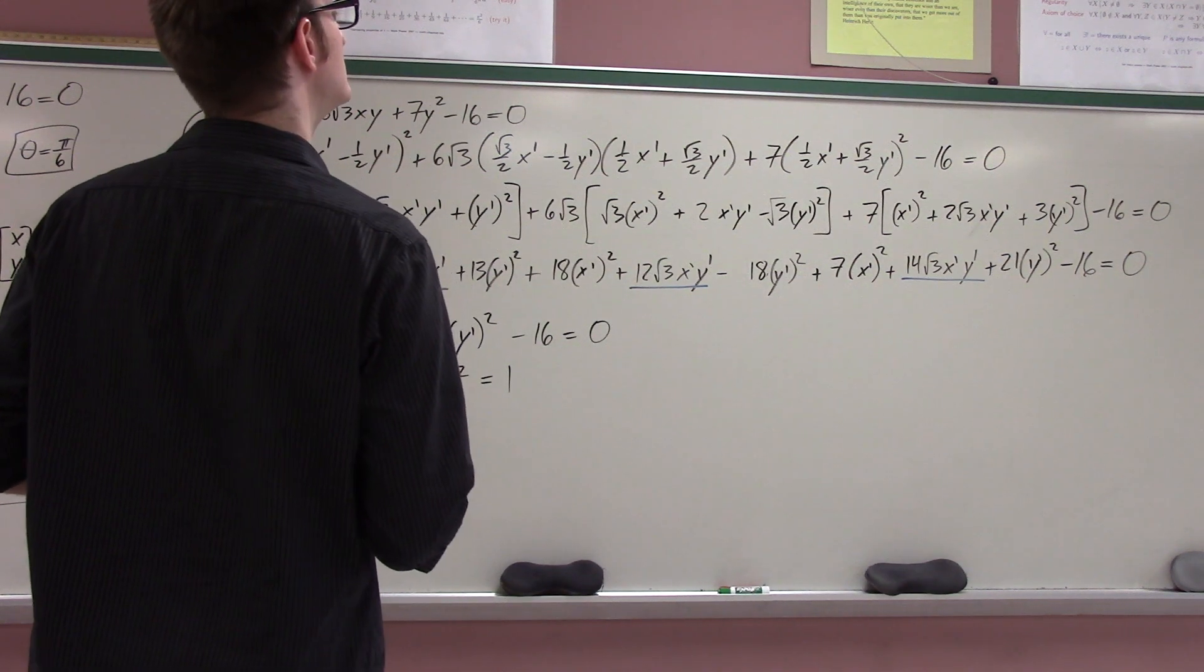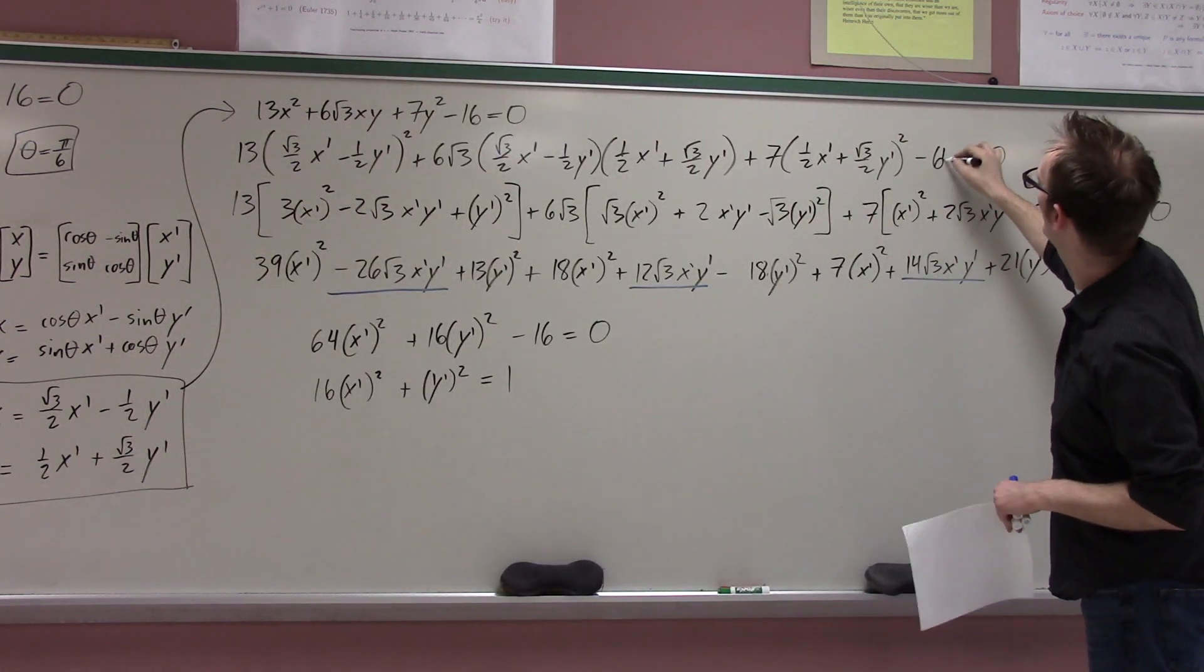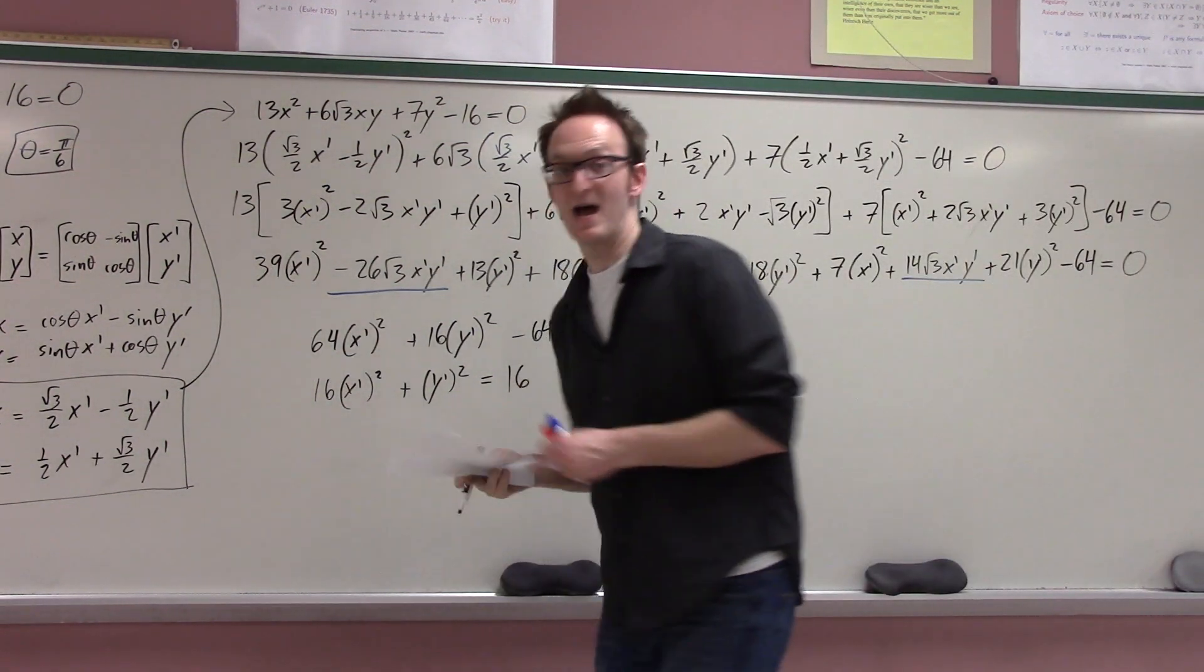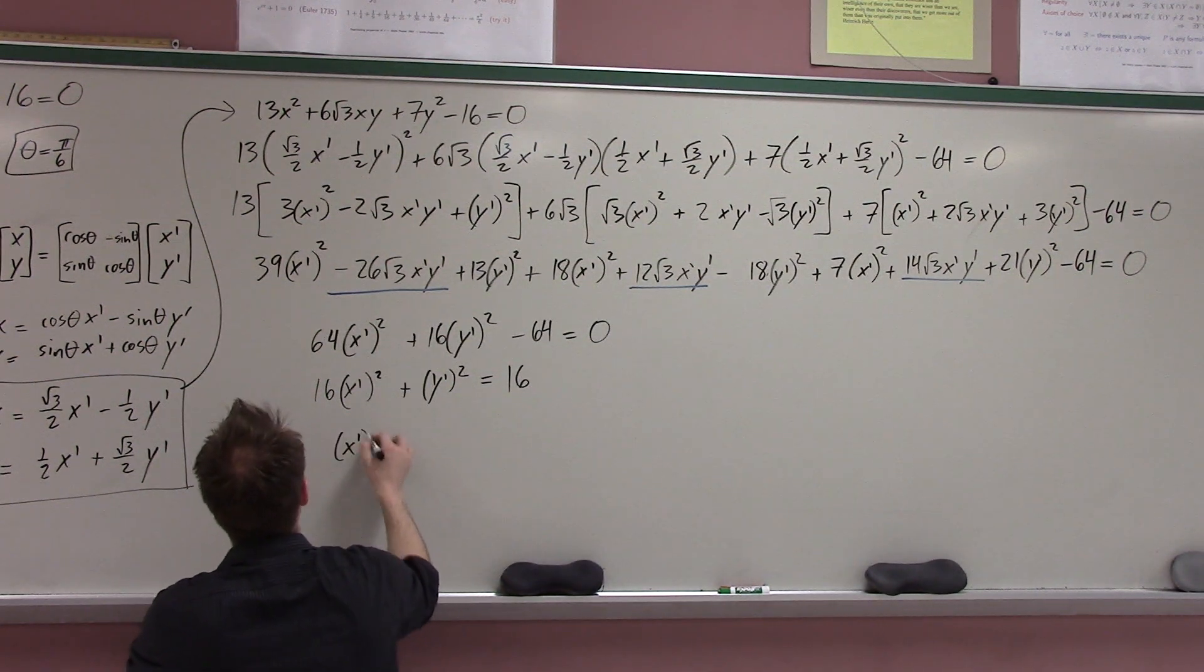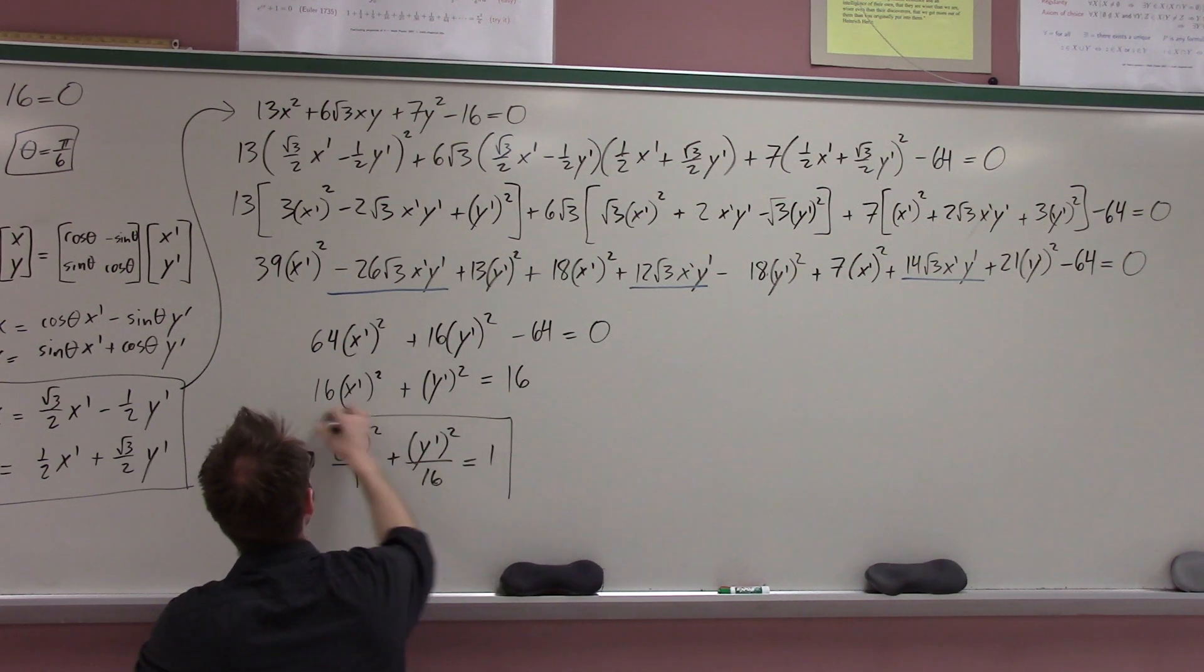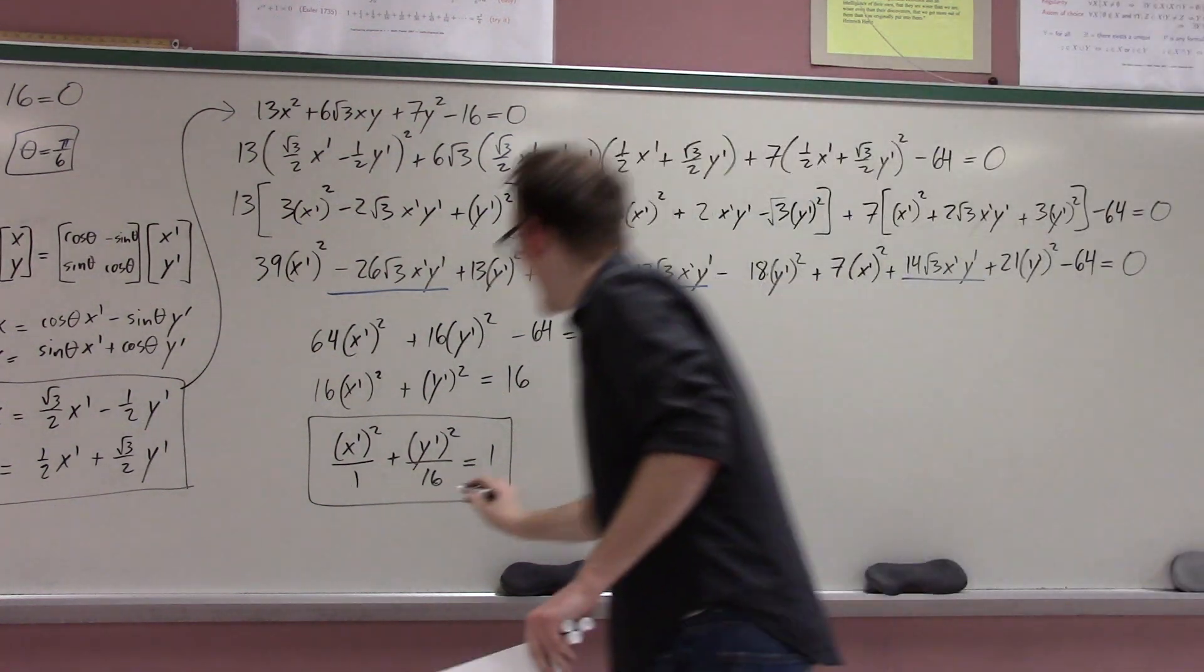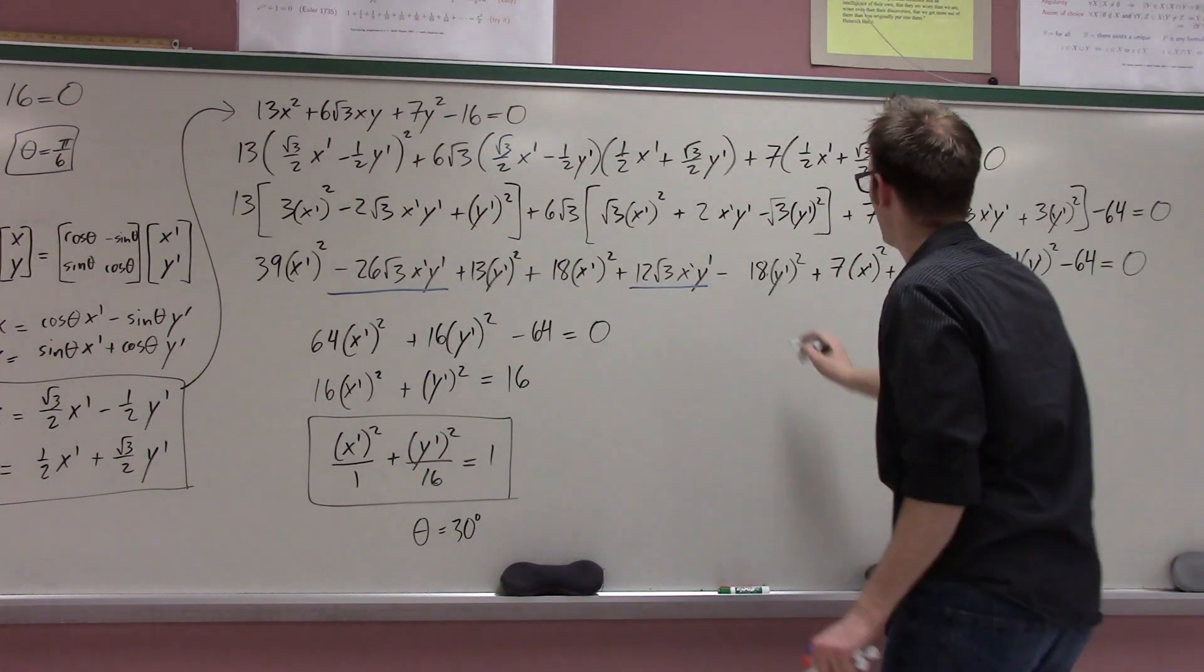Plus y prime squared equals one so after all of that work no equals what what happened something went wrong oh another mistake I made way in the beginning when I multiplied through by four that should be a 64 if you found this mistake and you're sitting there freaking out I apologize for making you freak out but this time I did the work in advance so that's good. So we get this and now finally after all this we get x prime squared over one plus y prime squared over 16 one holy crap.